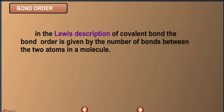In the Lewis description of covalent bond, the bond order is given by the number of bonds between the two atoms in a molecule.